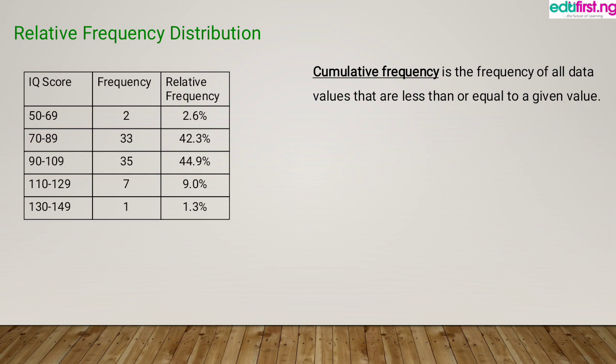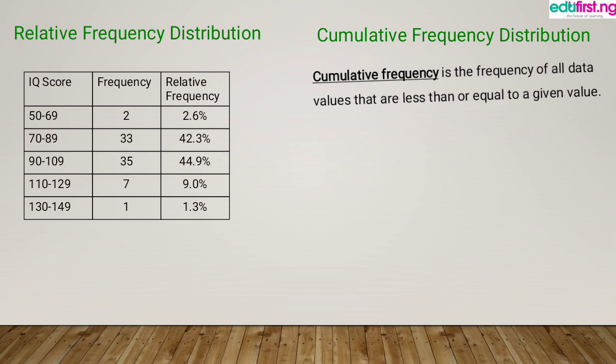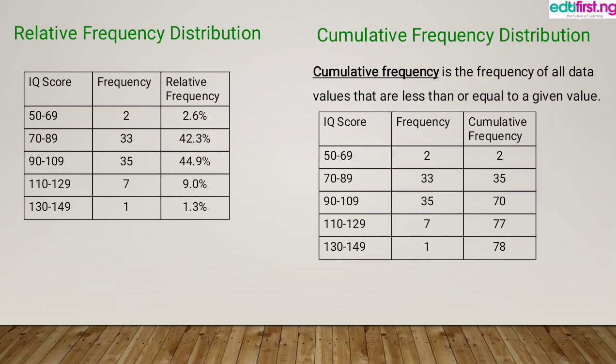Now let's talk about cumulative frequency. Cumulative frequency is the frequency of all data values that are less than or equal to a given value. In the table shown, the first cumulative frequency takes the first frequency. The second cumulative is the first frequency plus the second frequency. The third cumulative is the second cumulative plus the third frequency, and so on and so forth.